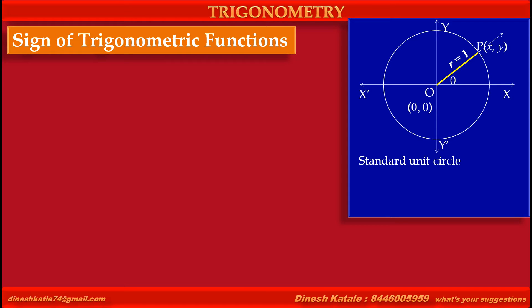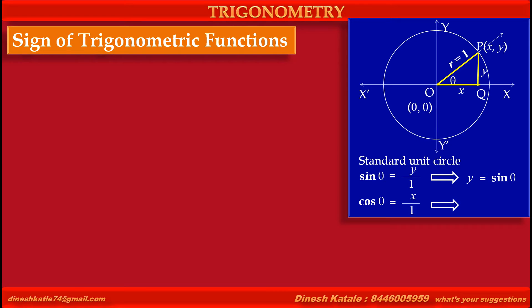Ray OP makes angle theta with the positive direction of the x-axis. PQ is the perpendicular from P to the x-axis at Q. The length of OQ is x, the x-coordinate of point P, and the length PQ is y, the y-coordinate of point P. In triangle OPQ, sine theta equals the opposite side y upon hypotenuse 1, which implies y is equal to sine theta. Cos theta equals the adjacent side x upon hypotenuse 1, which implies x is equal to cos theta.